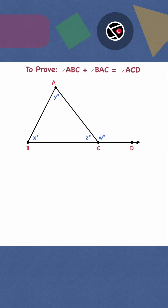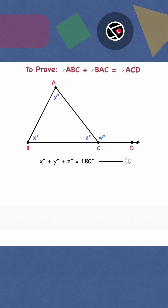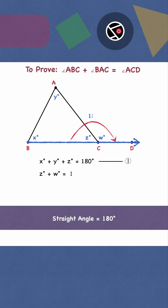For triangle ABC, X plus Y plus Z equals 180 degrees. Next, BCD is a straight angle, so Z plus W is 180 degrees.